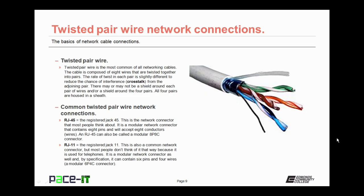So let's move on to twisted pair wire network connections. Twisted pair wire is the most common of all networking cables. The cable is composed of eight wires twisted together into pairs. The rate of twist in each pair is slightly different to reduce the chances of interference — called crosstalk — from adjoining pairs. It also reduces the opportunity for electromagnetic interference, or EMI. There may or may not be a shield around each pair of wires and/or a shield around all four pairs, which are housed in a common sheath.